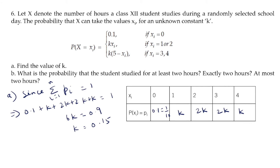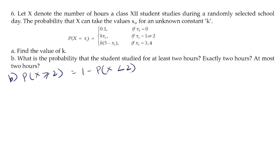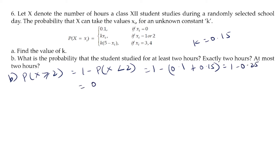Now let us find the probability that the student studied for at least 2 hours: P(X ≥ 2) = 1 − P(X < 2) = 1 − [P(X = 0) + P(X = 1)] = 1 − [0.1 + K] = 1 − [0.1 + 0.15] = 1 − 0.25 = 0.75.